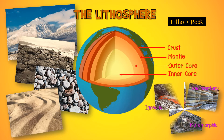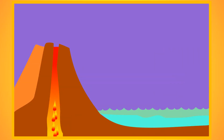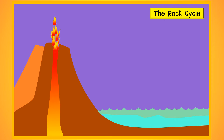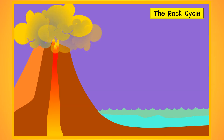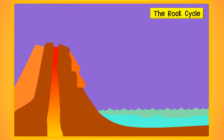The Earth is made of three main kinds of rock: igneous rock, sedimentary rock, and metamorphic rock. Rock is formed during the process of the rock cycle. It all starts when magma from under the crust moves towards the Earth's surface, causing a volcanic eruption. The magma is called lava as it leaves the volcano. Over a long period of time, the lava cools and hardens into igneous rock.